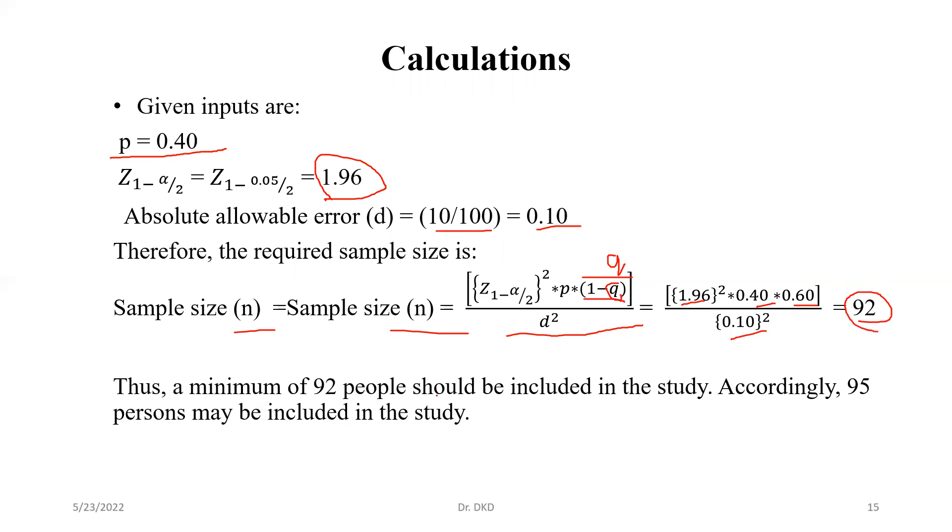Thus, a minimum of 92 people should be included in the study. Accordingly, 95 persons may be included in the study. So this is the simple method for prevalence study. We can calculate the minimum sample size. Thank you.